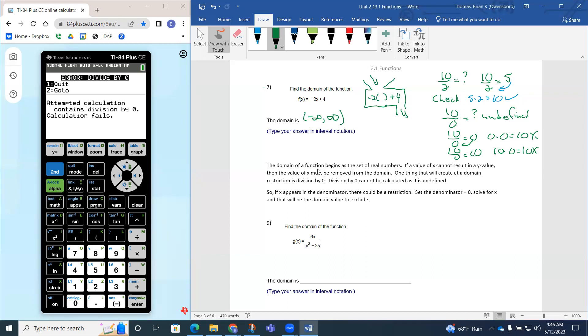So again, domain is going to start out as the set of real numbers, and then we're going to try to figure out if there's any values to remove. So if you do see x in the denominator, if x appears in the denominator, there could be a restriction. So then we're going to be setting the denominator equal to 0 and solving for x, and that's the values of the domain we're going to exclude. So again, in question 7, x was not in the denominator, so therefore we had no domain restrictions, and therefore the domain is the set of all real numbers.